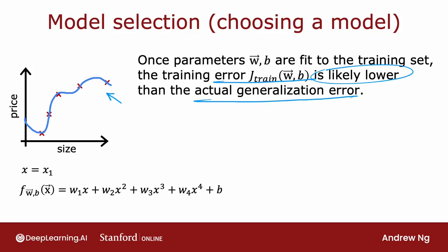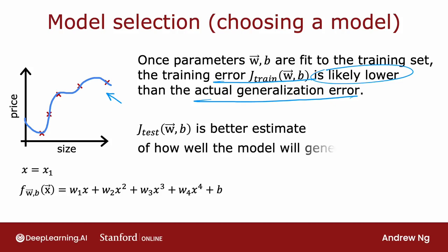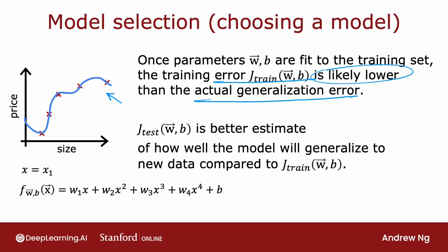By generalization error, I mean the average error on new examples that were not in the training set. What you saw in the last video is that J test—the performance of the algorithm on examples it was not trained on—will be a better indicator of how well the model will likely do on new data, meaning other data that's not in the training set.